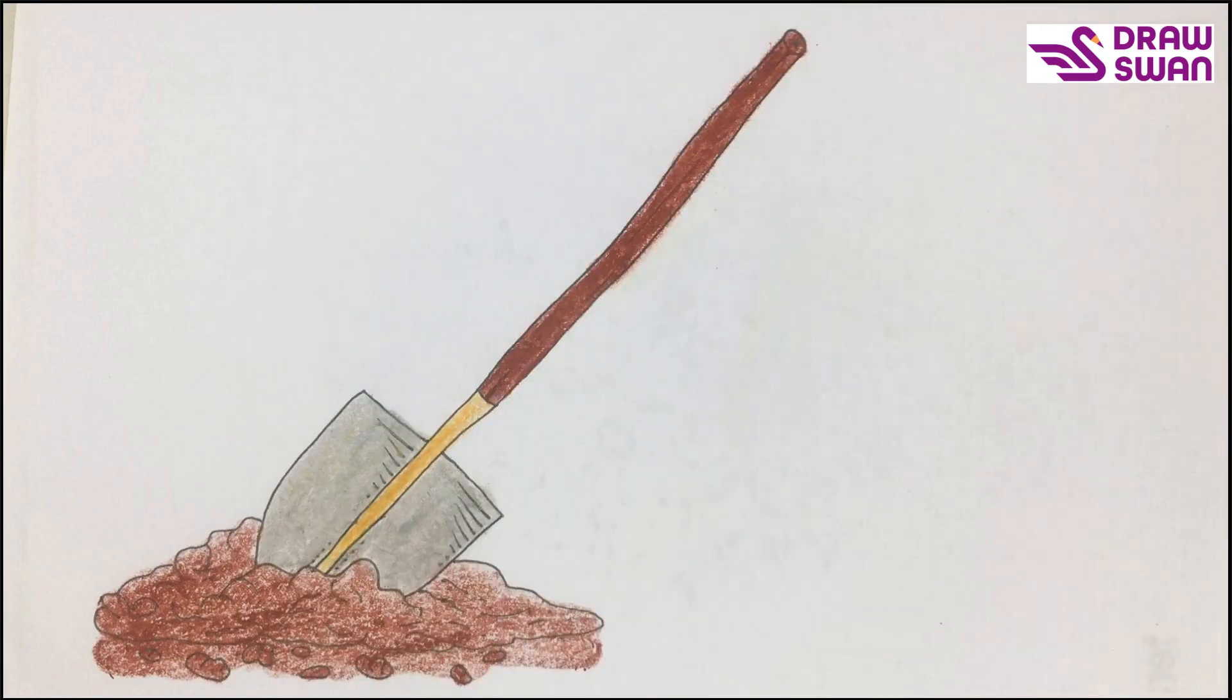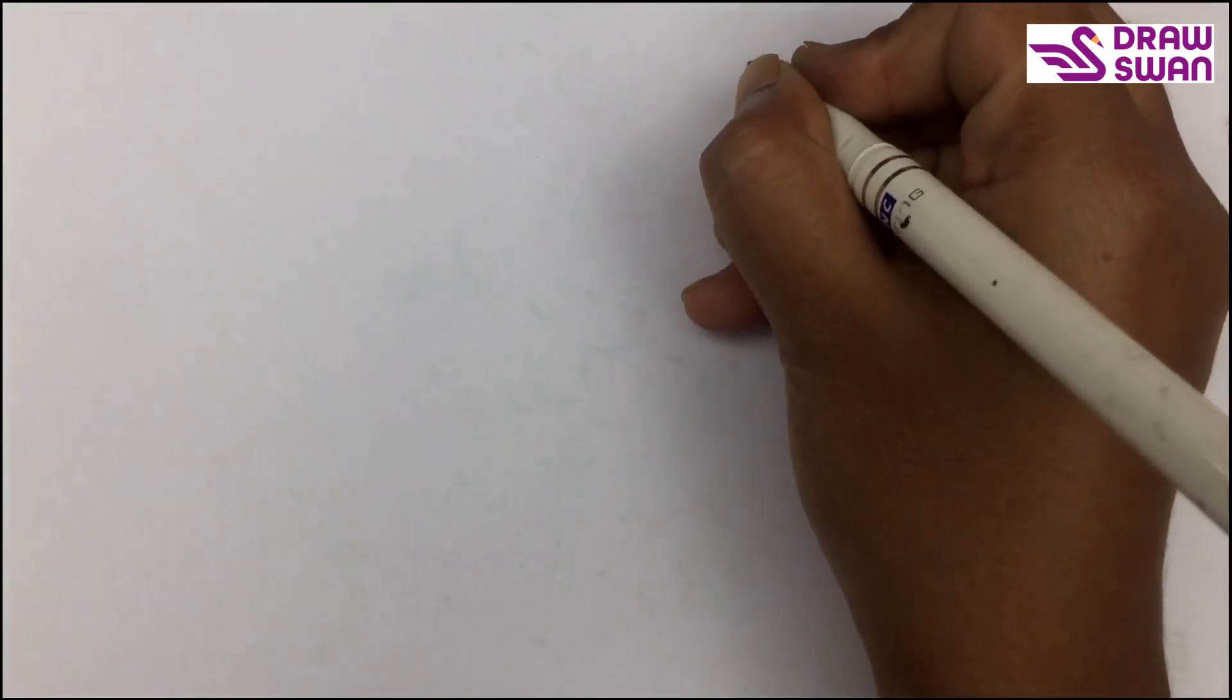Hey there, welcome to our channel. Today we will see how to draw a garden spade. For this I'm using my black pen. At the beginning you have to draw a circle.